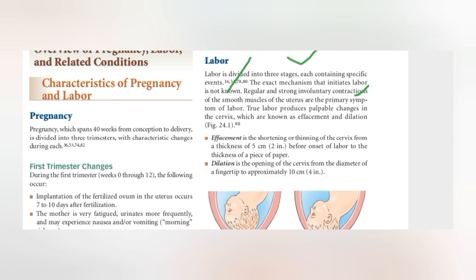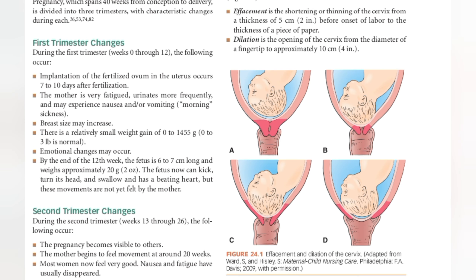Labor produces palpable changes in the cervix, known as effacement and dilation. What is effacement? Effacement is the shortening or thinning of the cervix from a thickness of five centimeters, or two inches, before the onset of labor, down to the thickness of a piece of paper.